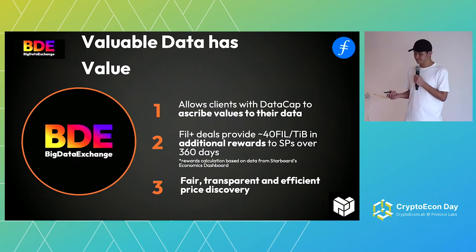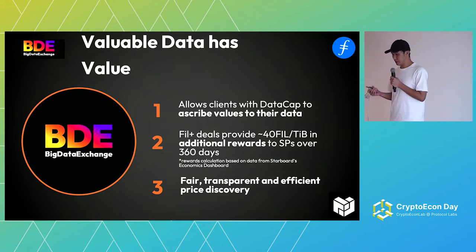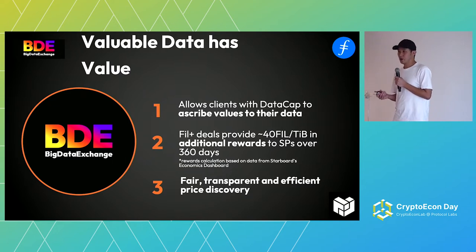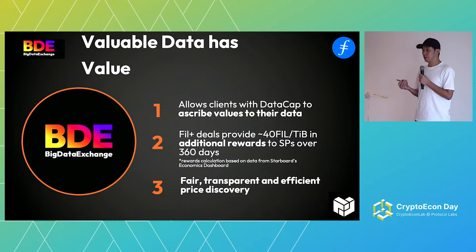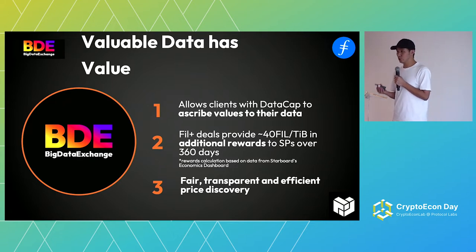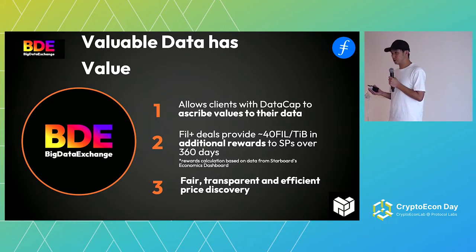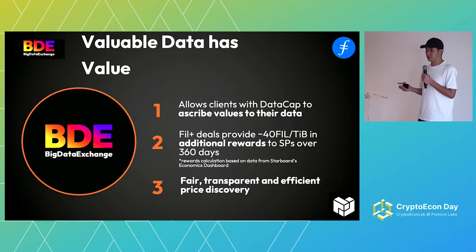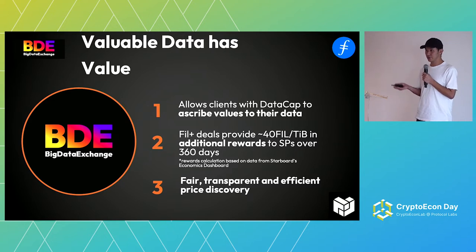Now that we've determined that valuable data has value — and we don't know exactly how much this value is — what we do know is that when SPs take on a FIL+ deal, they will be allocated an additional 40 FIL per year per TiB right now. So while we don't know the exact value, it will likely be somewhere between zero and 40. This essentially opens the floodgate and allows the market to discover that valuable data does have value, through a fair, transparent, and efficient price discovery process.